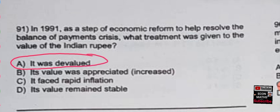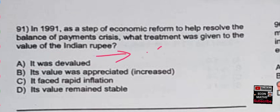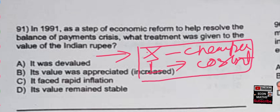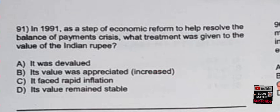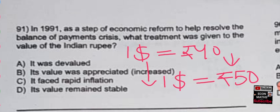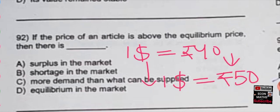Devaluation means a deliberate downward adjustment in the official exchange rate. With devaluation, exports became cheaper and imports became costlier, which helped resolve the balance of payment crisis. Simply put, if one US dollar equals 40 rupees, after devaluation one US dollar becomes 50 rupees — that is devaluation of the Indian Rupee.